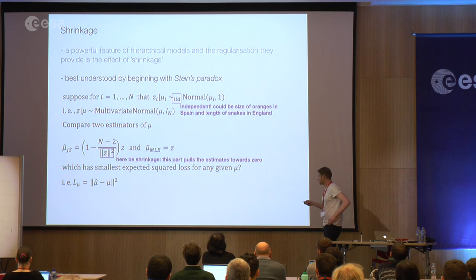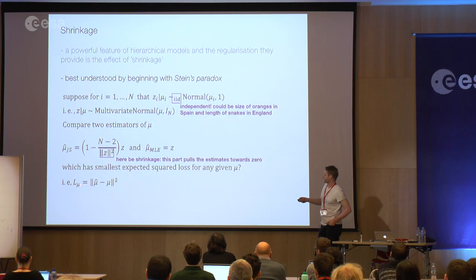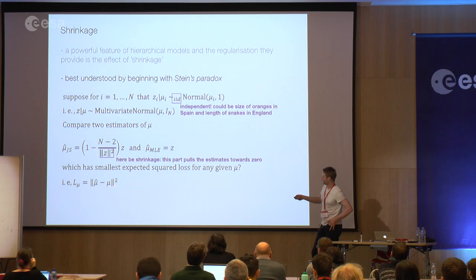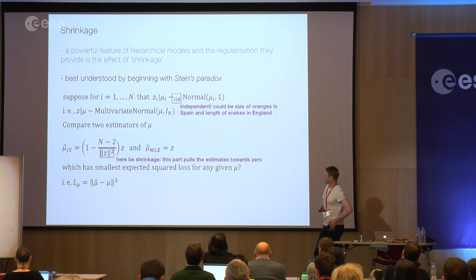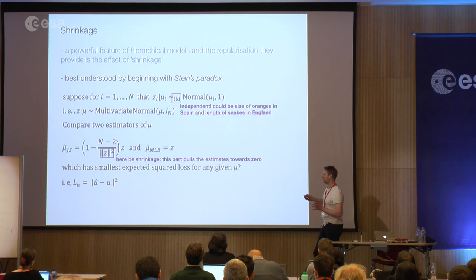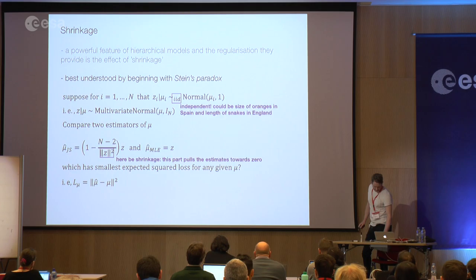In this type of problem, 'doing better' is defined by the expected squared loss criterion: the sum of squared differences between our estimate and the actual true parameter values, summed over all n objects and taken in expectation over the noise-generating process. We're not specifically weighting any object more strongly a priori, though larger parameters may naturally contribute more to the sum.